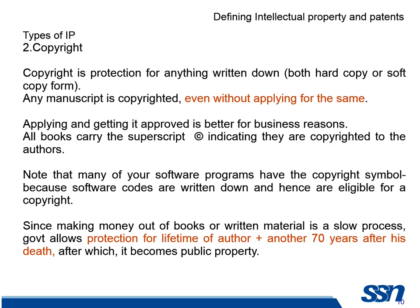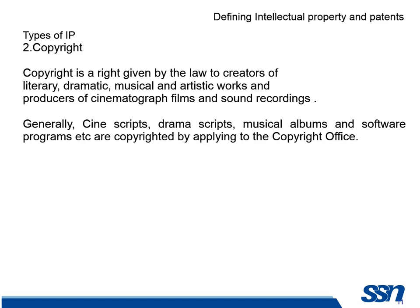In copyright, the protection is for anything written down — both hard copy or soft copy. Any manuscript is copyrighted even without applying for the same. If I publish a book and have not applied for copyright, the book still has copyright. It is normally marked with the © symbol. Many software programs have the copyright symbol because they are written-down programs eligible for copyright. Copyright protection is given for the lifetime of the author plus another 70 years after his death; then it becomes public property. Copyright is a right given by law to creators of literary, dramatic, musical and artistic works. Even though there is no need to apply, in business cases people do apply. Cine scripts, drama scripts, musical albums — these are applied to the copyright office.